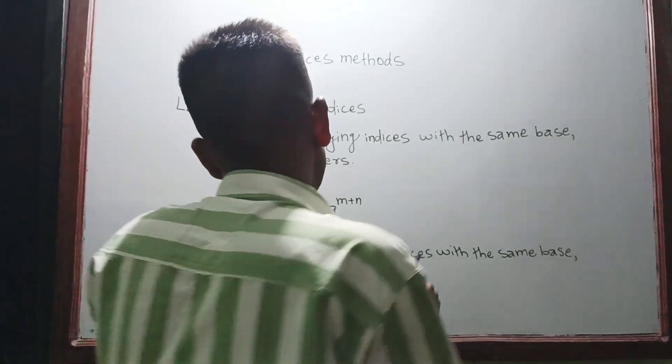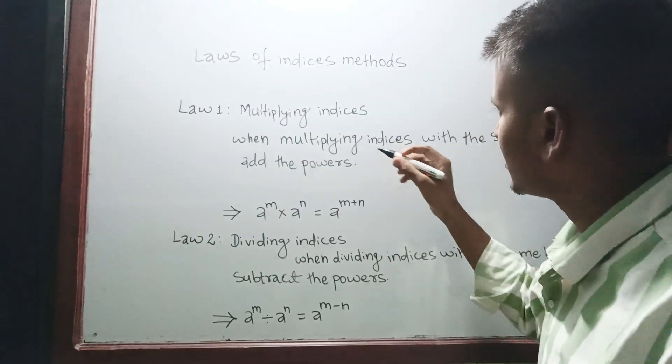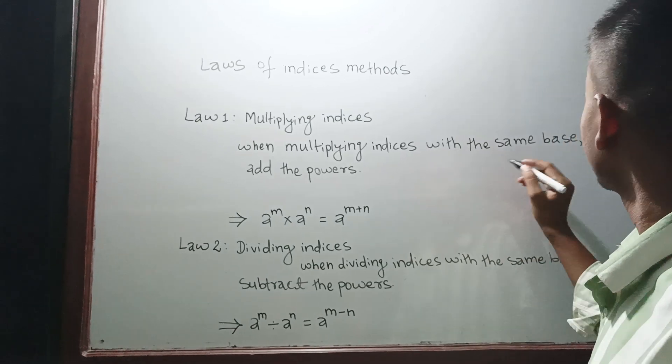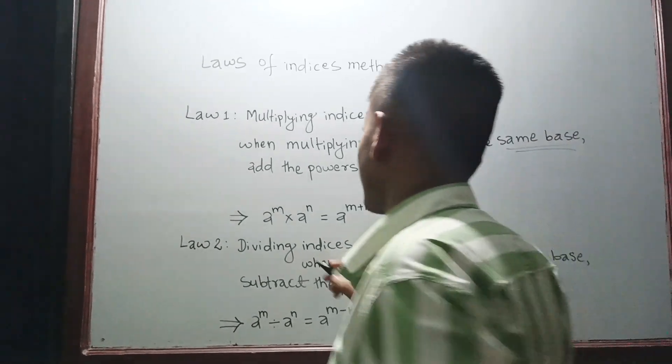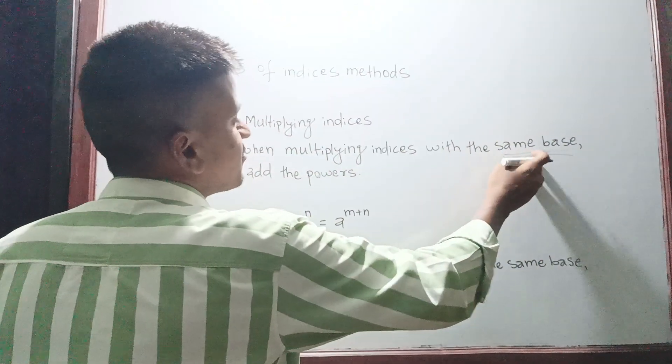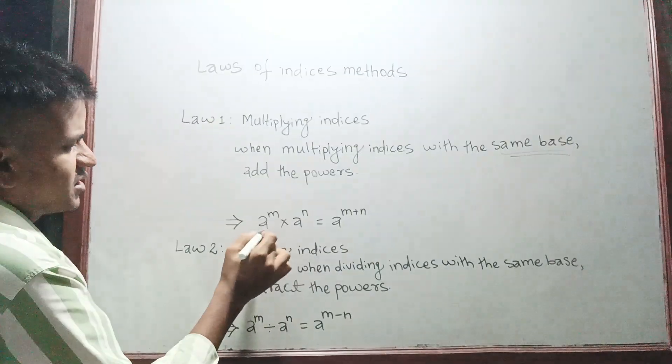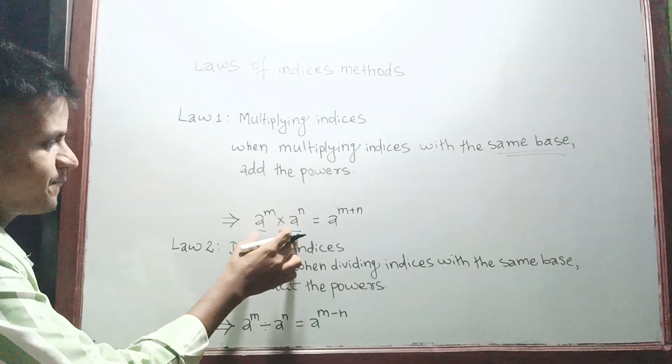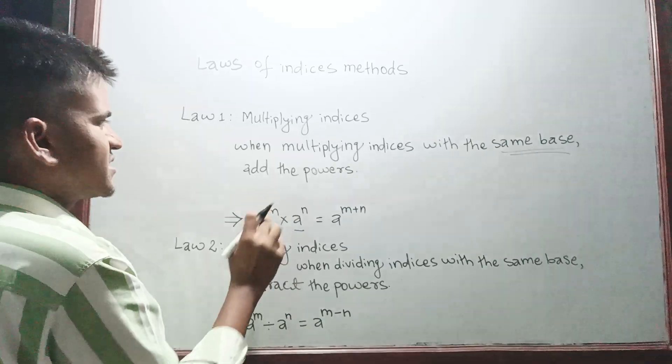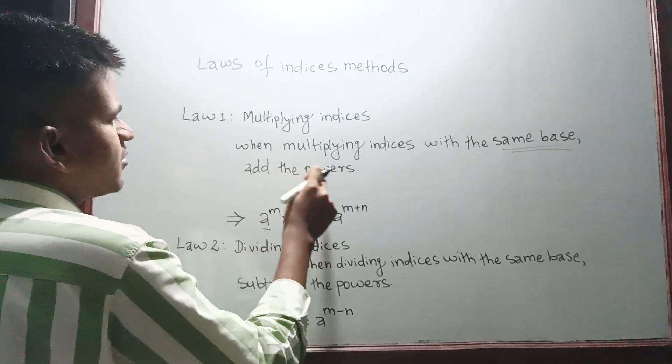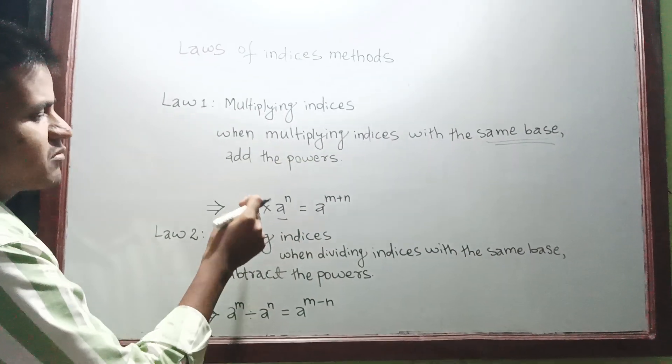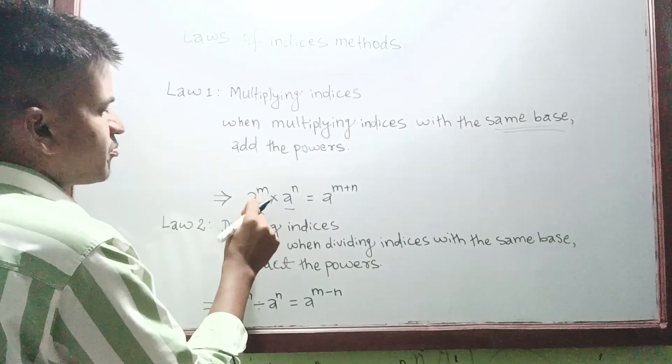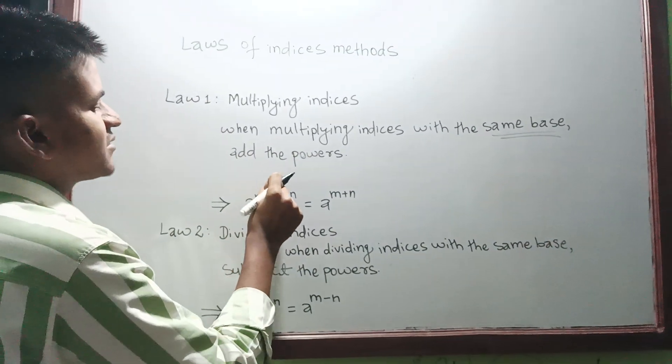Law 1: Multiplying indices. When multiplying indices with the same base, this should be in mind - if the bases are same, see here, this 'a' and this 'a', both bases are same. If both bases are same, add the powers. The power is here and here the power is here. So bases are same but powers are different - doesn't matter at all.